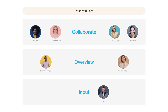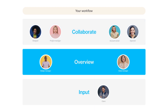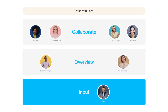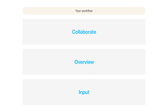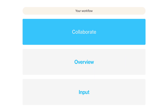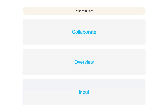Understanding the role that each of your stakeholders plays will become crucial in building out your system. Collaborate stakeholders will require full access. Overview stakeholders will need view and share links, and input stakeholders will get access to connected forms. Try mapping your own stakeholders across each of your steps into collaborate, overview, or input groups. You can reference these later when deciding which level of information to share with each person.